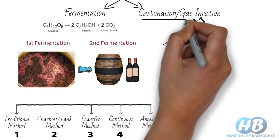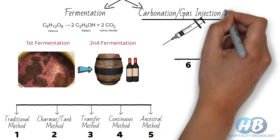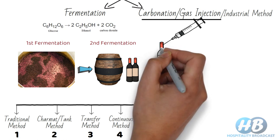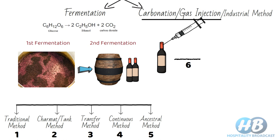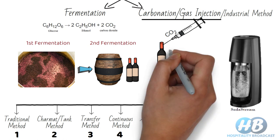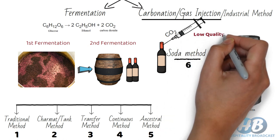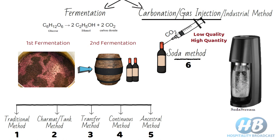The last method is carbonation — also called gas injection or the industrial method. It is one of the simplest and fastest methods of making sparkling wines, essentially carbonating a still wine using an injection of carbon dioxide, like in the case of soda — which is why it is also called the soda method. Although the quality of wine is low, the quantity is high and produced in a very short period of time. Due to inferior quality, the bubbles dissipate quickly compared to other sparkling wines.